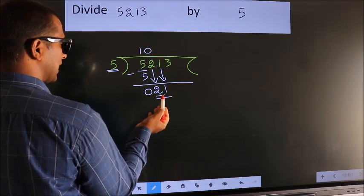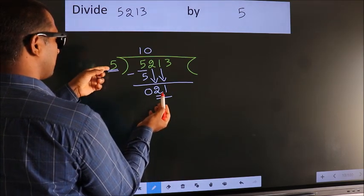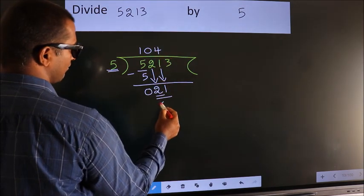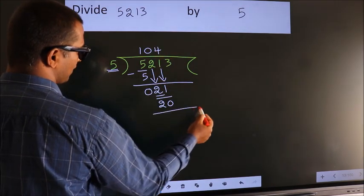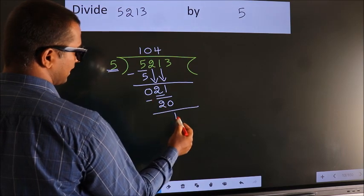A number close to 21 in the 5 table is 5 fours, 20. Now we subtract. We get 1.